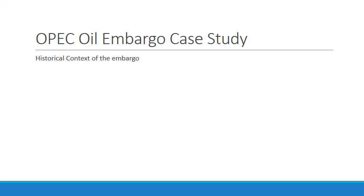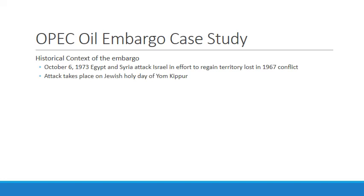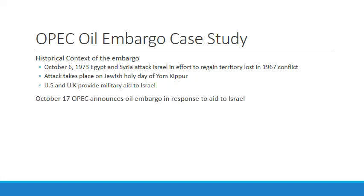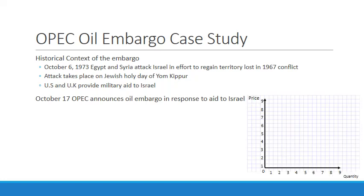On October 6th, 1973, Egypt and Syria attacked Israel in an effort to regain territory lost in the 1967 conflict. The attack took place on the Jewish holy day of Yom Kippur — it's called the Yom Kippur War. The U.S. and the U.K. provided military aid to Israel to prevent the attack from being successful. On the 17th, OPEC announced an oil embargo in response to that aid, halting all shipments of oil to the United States and the U.K.